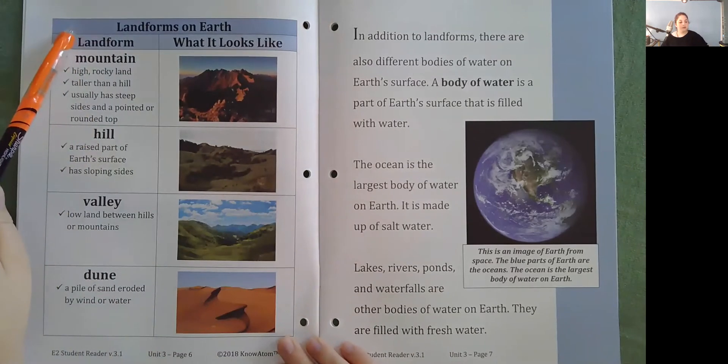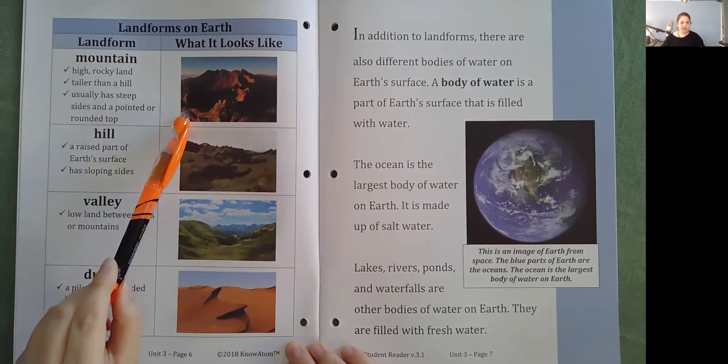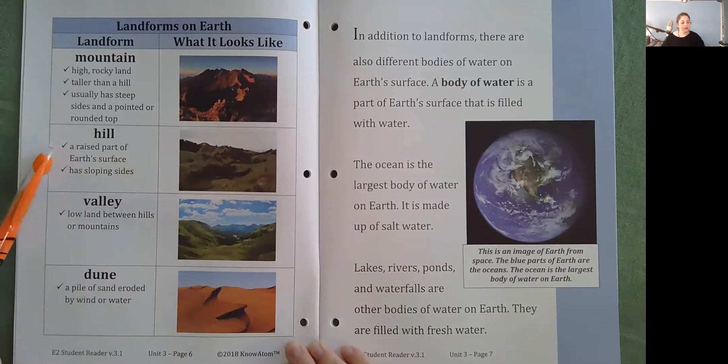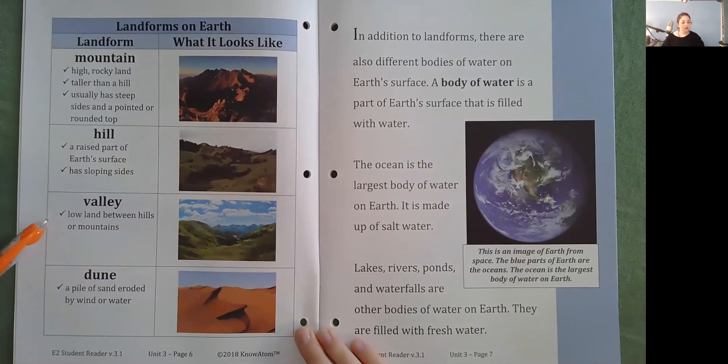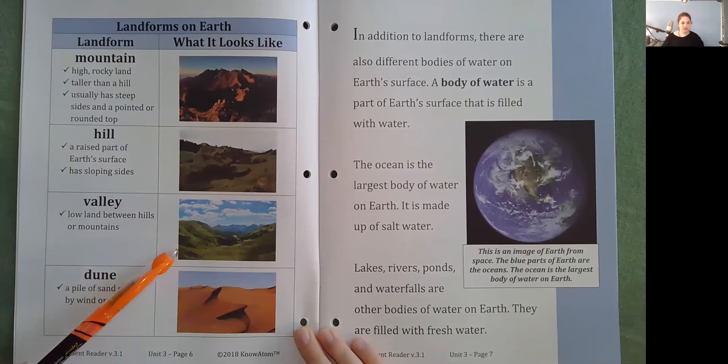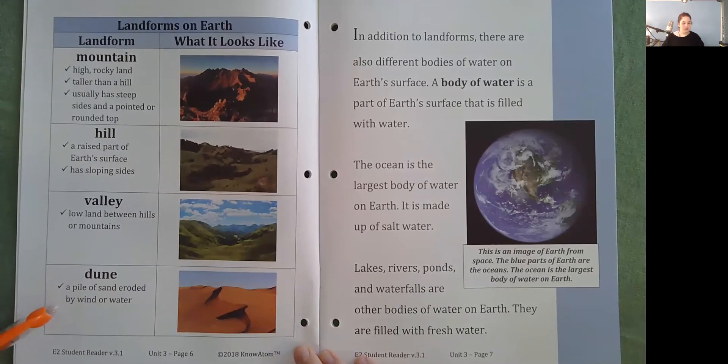Landforms on Earth. Mountain. High, rocky land. Taller than a hill. Usually has steep sides and a pointed or rounded top. Hill. A raised part of Earth's surface. Has sloping sides. Valley. Low land between hills or mountains. Dune. A pile of sand eroded by wind or water.